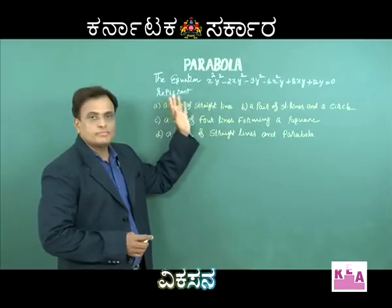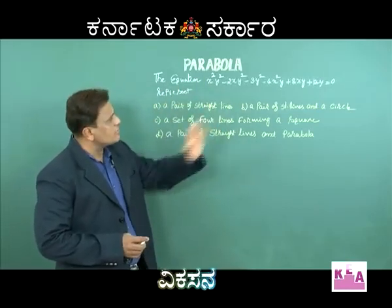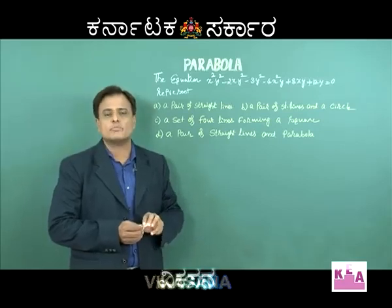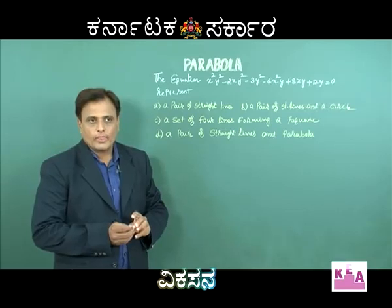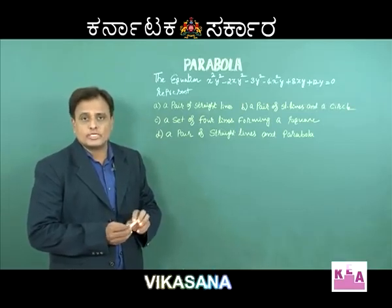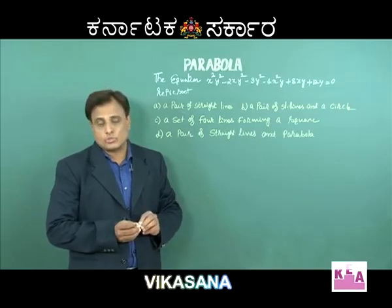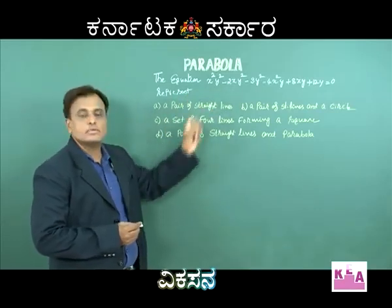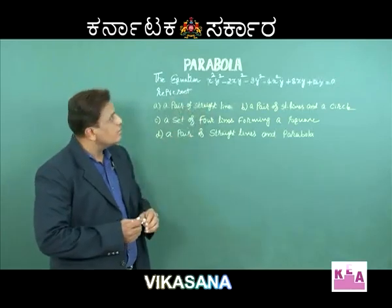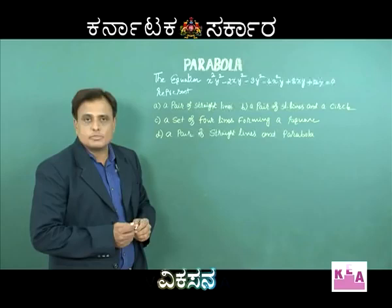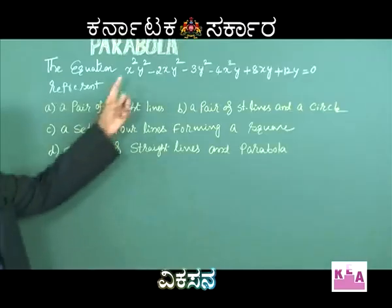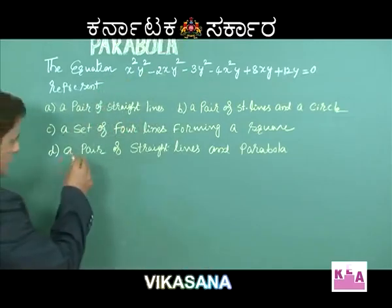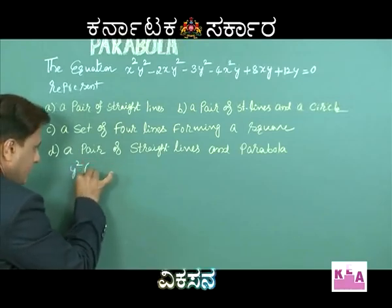Observe the equation — suddenly nobody can guess what it represents. It does not represent a circle because the general form of a circle is x² + y² + 2gx + 2fy + C = 0. A pair of lines has the form Ax² + 2hxy + By² + 2gx + 2fy + C = 0. Better to work directly on this equation. In the first three terms, y² is a common factor.